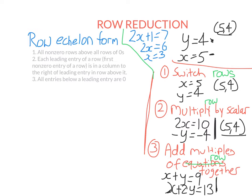Row echelon form has three conditions. A matrix is in row echelon form if: all non-zero rows are above all rows of zeros; each leading entry of a row — that is, the first non-zero element in that row — is in a column to the right of the leading entry above it; and all entries below a leading entry are zero. Let's look at examples of matrices that are or aren't in row echelon form.